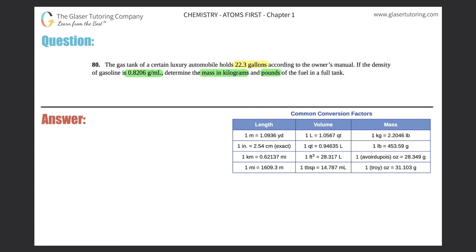This looks like a density problem because it's telling me that the gas tank holds 22.3 gallons, which is a type of volume, and they're telling you that the density is 0.8206 grams per milliliter and they want to know the mass. So they gave me a volume, a density, and they're looking for mass, so definitely we have to use the density formula. That formula is D equals M over V: density equals mass divided by volume.